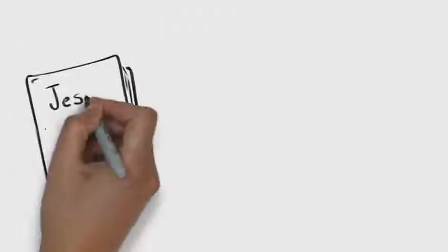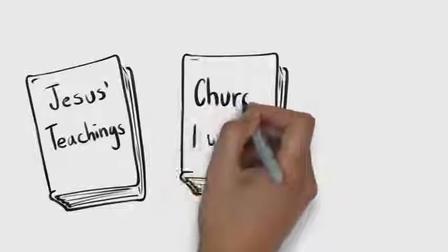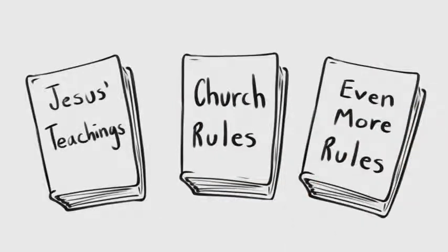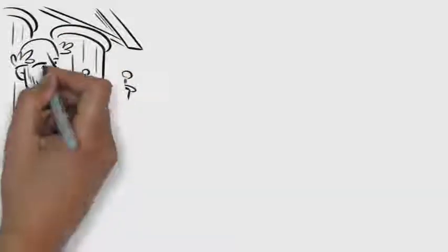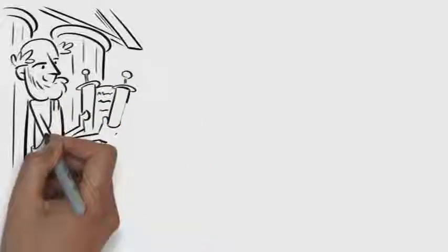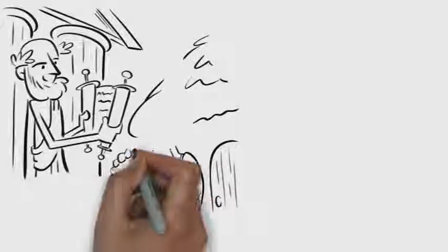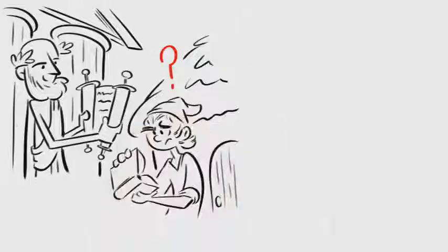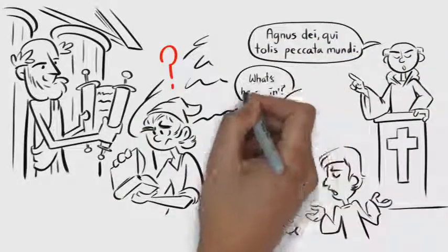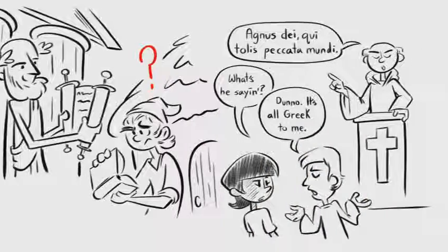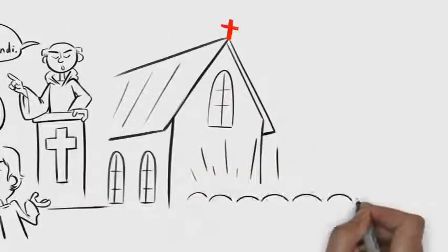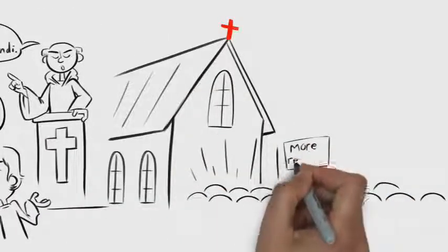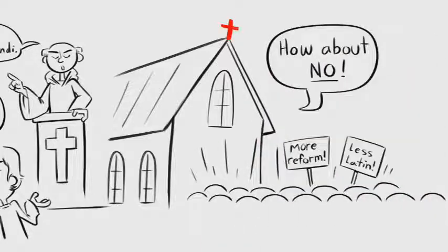Others believed that the church needed to change its practices so that the common people could participate more in the worship of God. For instance, ever since the church was part of the Roman Empire, the Bible had only been translated into Latin, the language of Rome. But nearly a thousand years after the empire's fall, very few common people spoke Latin, so they couldn't read the Bible or even understand much of the church service, which used Latin as well. Reformers wanted the Bible and the service to be entirely in a language the people could understand. The church refused.